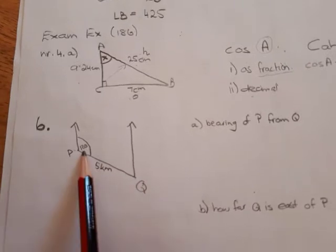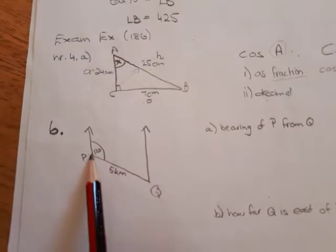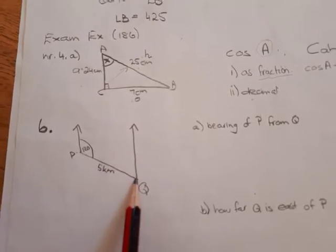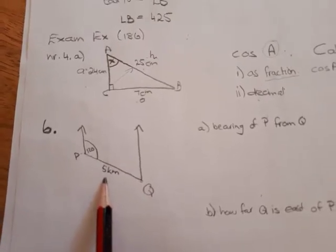Port Q is 120 degrees from port P and a ship sails down that path which is 5 kilometers.